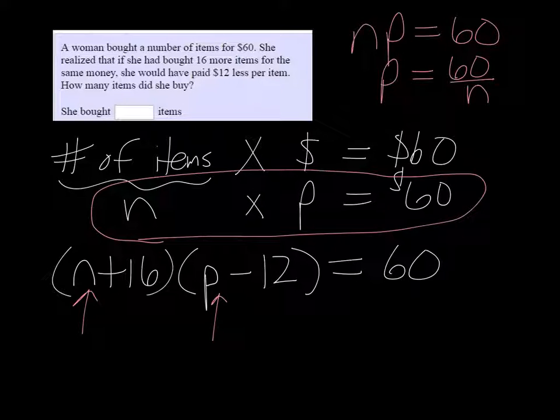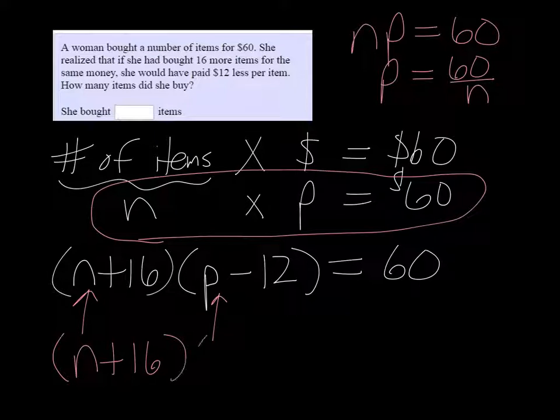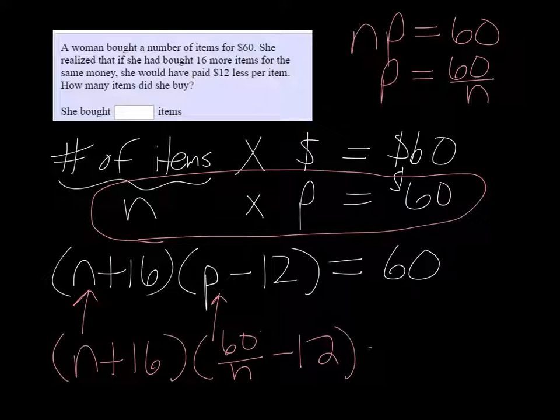So $60 divided by however many items you bought gives you the price. So we're going to replace P with 60 over N, and then I have an equation with just one variable.